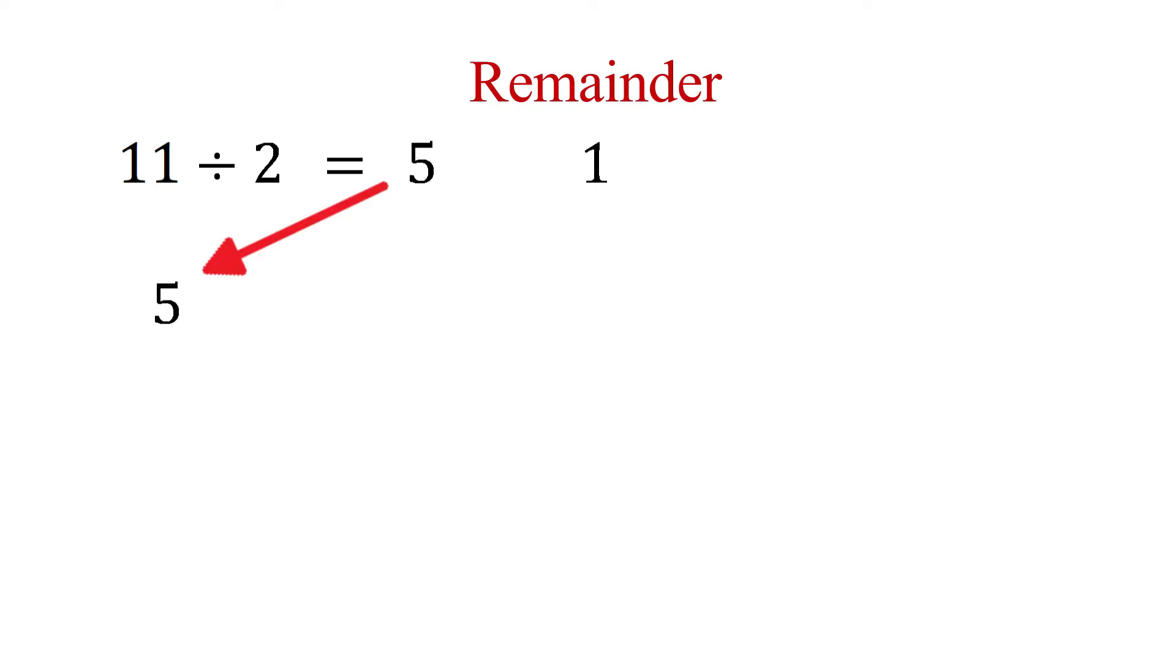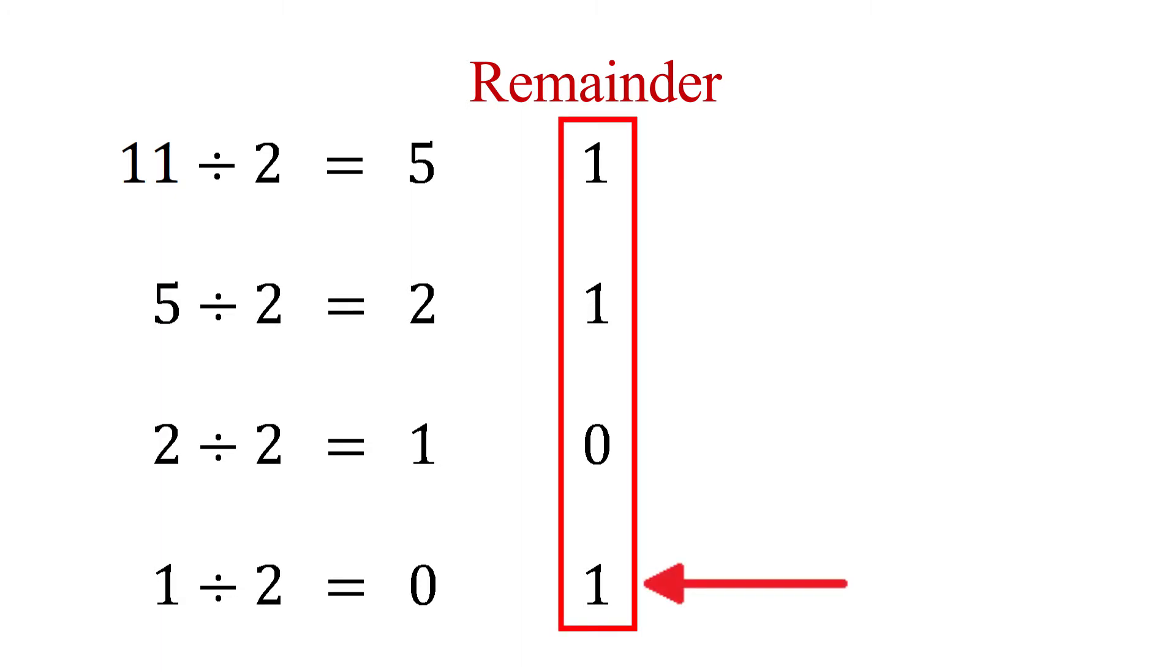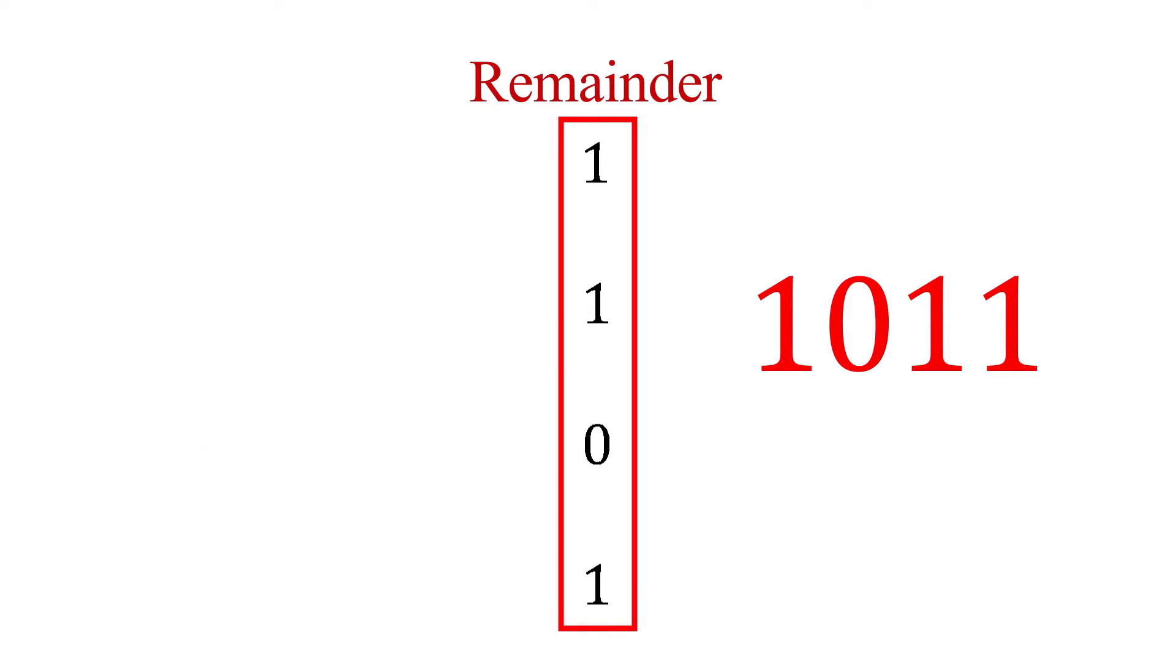Now write the 5 in the next row. Now divide by 2 again. This time we get 2 with 1 remainder, so place the 1 remainder in the remainder column next to the 5 and the 2 on the next row. Divide by 2 again and we get 1 with no remainder. The 0 remainder goes in the remainder column and the 1 goes on the next row. Finally, we divide 1 by 2 and get 0 with 1 remainder. Place the remainder next to the 1 in the remainder column, and our repeated division is complete. The number is read from the bottom of the remainder column to the top. This gives us 1011.